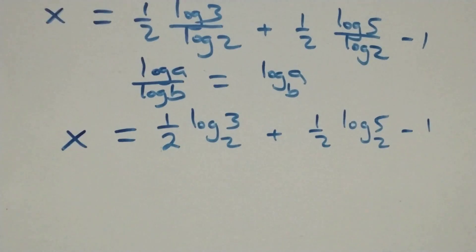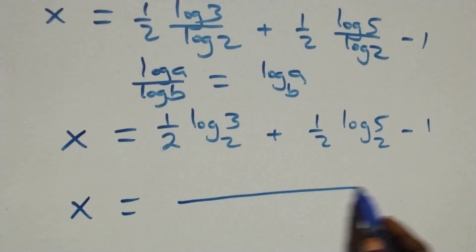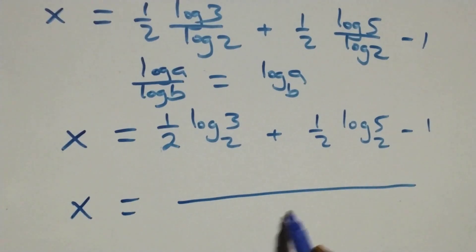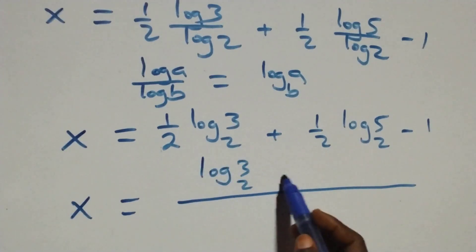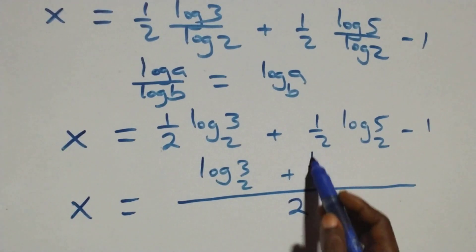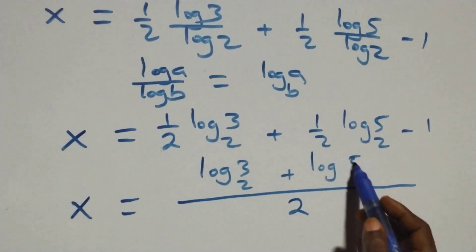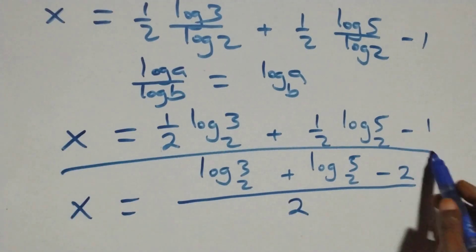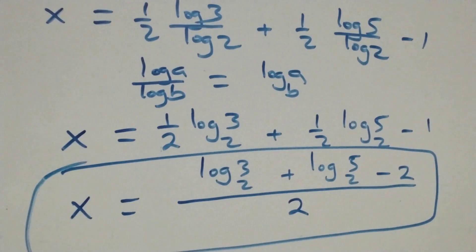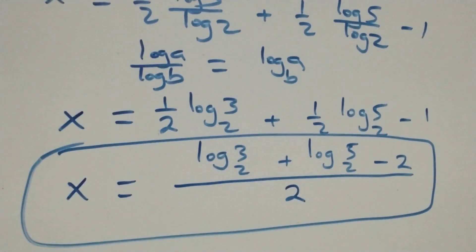We bring this together as one fraction over 2. The denominator is 2, giving us x equals (log₂3 plus log₂5 minus 2) all over 2. That is the value of x.